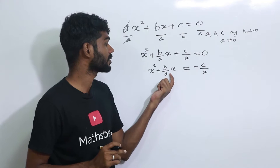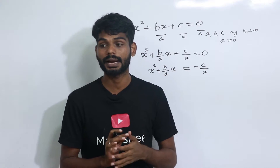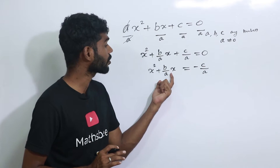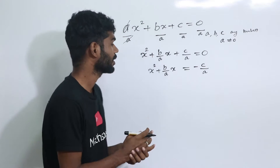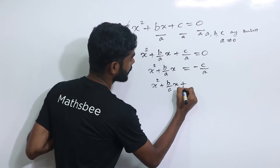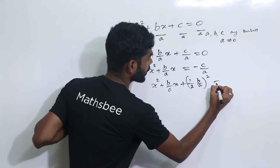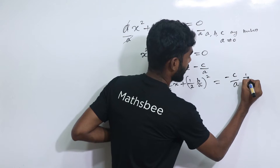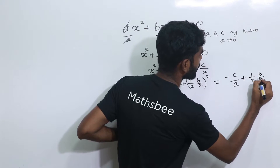We look at the coefficient of x, which is b by a. We take half of that and square it. So we add half of b by a, all squared, to both sides: x squared plus b by a into x plus (b/2a) squared, and on the right hand side minus c by a plus (b/2a) squared.